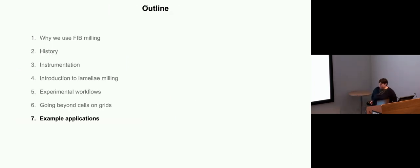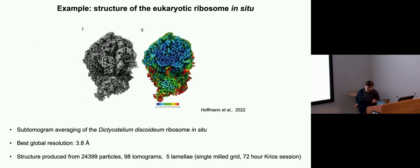Finally, I just want to briefly show some examples of the applications of what you can do with these lamellae once they're made. We've already seen this slide this morning in Tammy's talk. But this is the in-situ structure of a eukaryotic ribosome where they managed to get to 3.8 angstrom resolution. This was from a remarkably small amount of material. So 25,000 particles, but less than 100 tomograms and 5 lamellae, which is one grid.